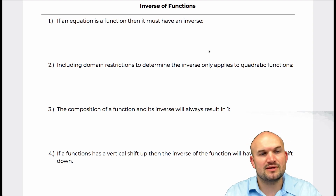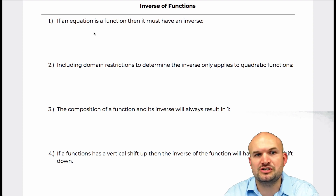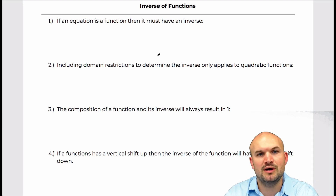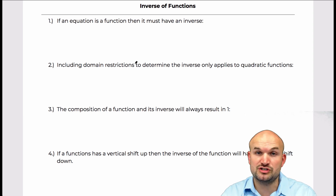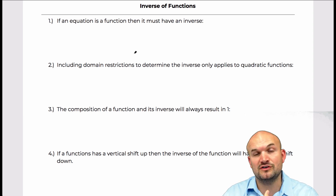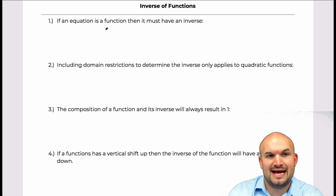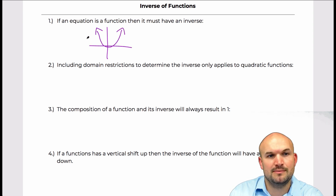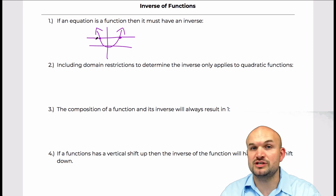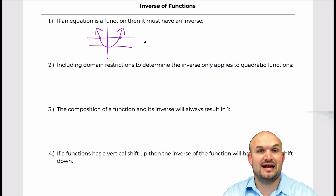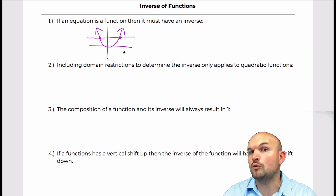The first statement is: if an equation is a function, then it must have an inverse. This goes into our basic understanding that functions with inverses must be one-to-one. If a function is not one-to-one, it does not pass the horizontal line test. A popular example of a function that does not have an inverse is the quadratic.